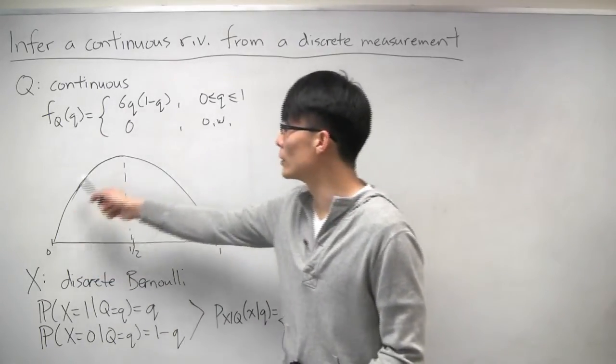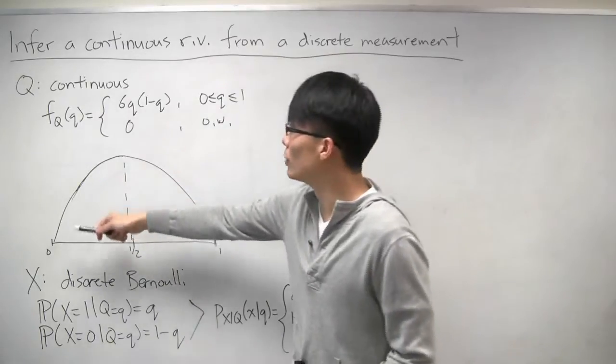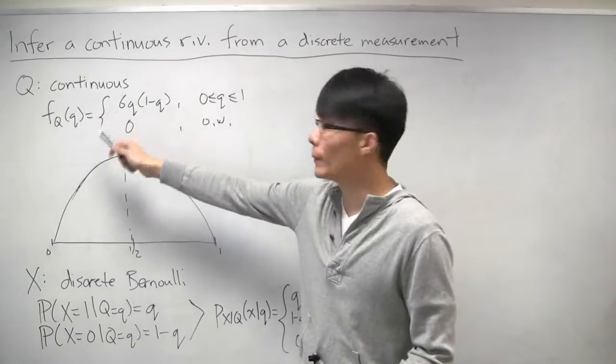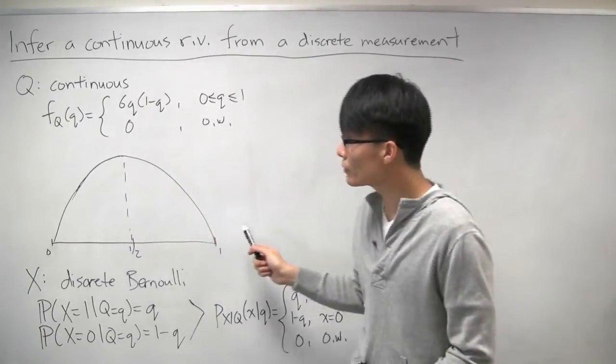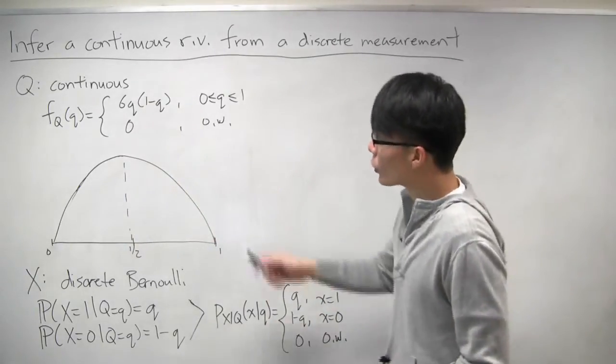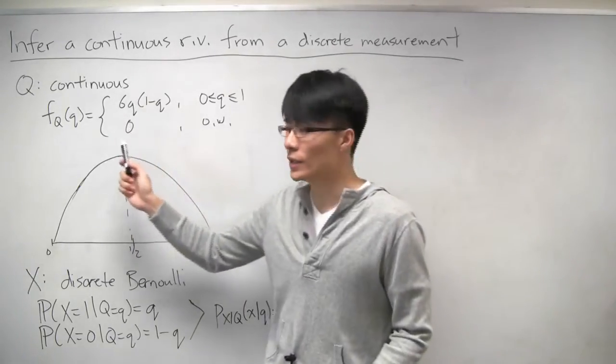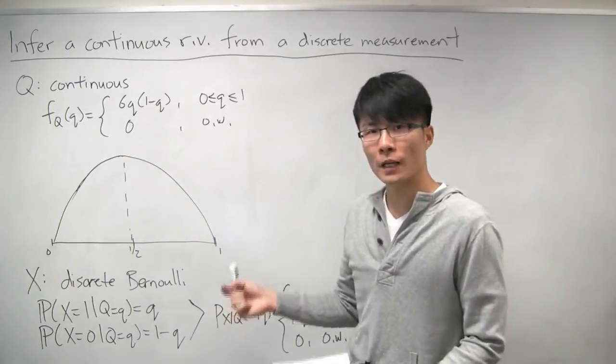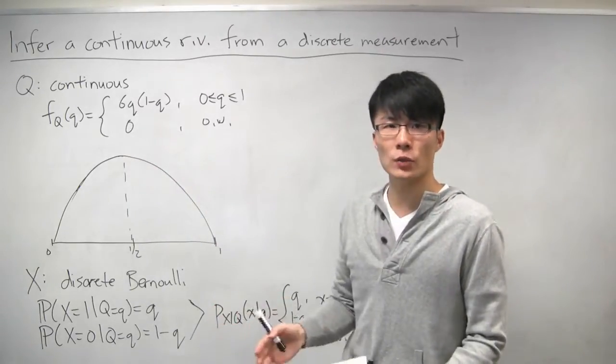And here is our prior belief about how this random bias is distributed. We're going to try to infer what this bias is by flipping the coin and observing whether or not we got heads or tails.